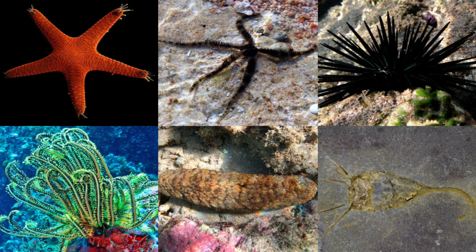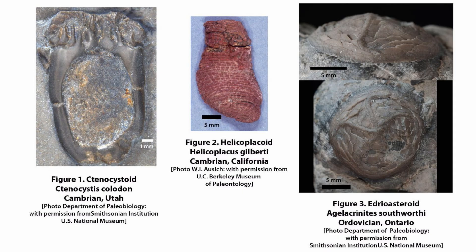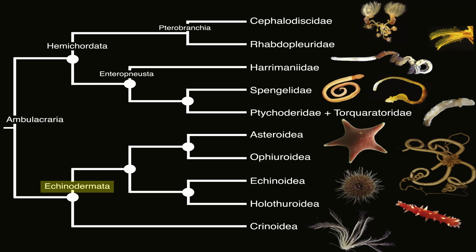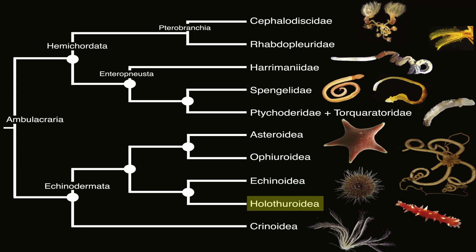Though the echinoderm phylum is still large, diverse, and ecologically significant, there was a time when at least 20 classes existed on Earth, as is evidenced by the fossil record. Today, the five extant echinoderm classes exist. It's worth mentioning that although there is widespread consensus that these five classes are distinct, the exact number and relationship between orders within a class, and even the total number of orders, is still a subject of ongoing research.